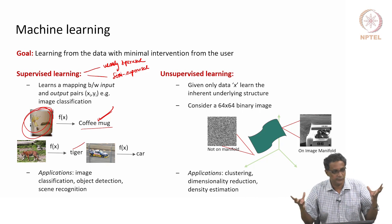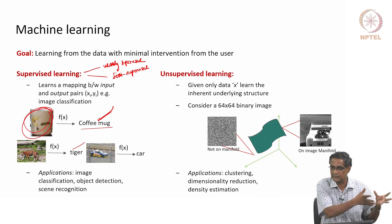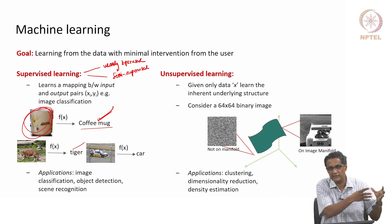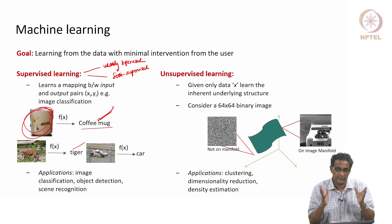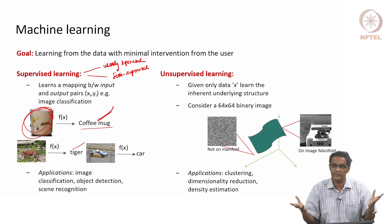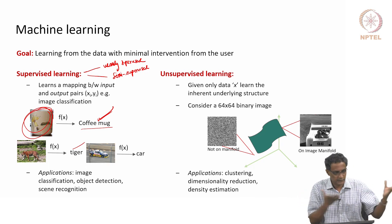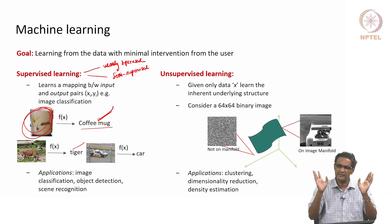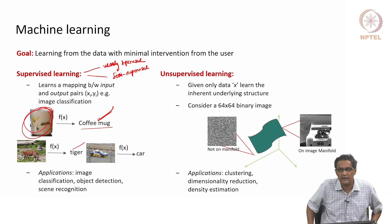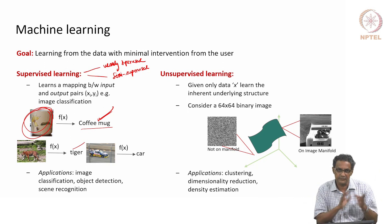PCA — what does it do? You have a set of examples for a certain class, you construct a covariance matrix, and then you get the most significant eigenvectors — those are your principal components. That is a representation, the best representation for that object class in a mean square error sense. But PCA is basically a linear algorithm — it is totally linear, completely a linear operation.